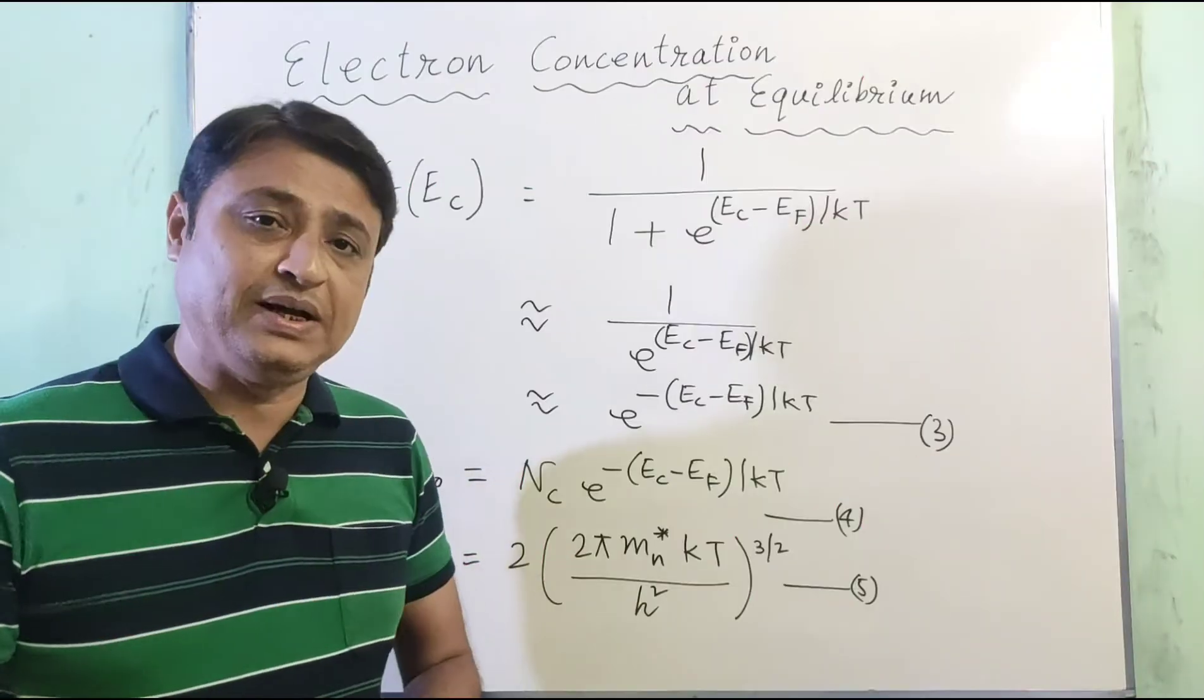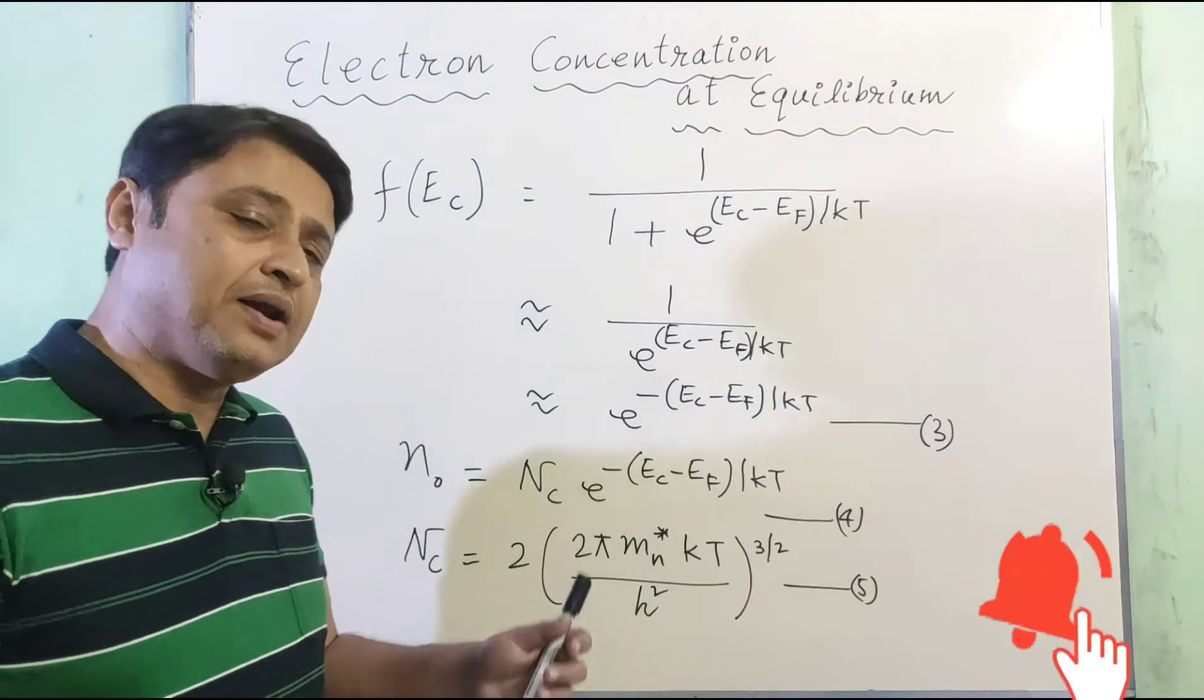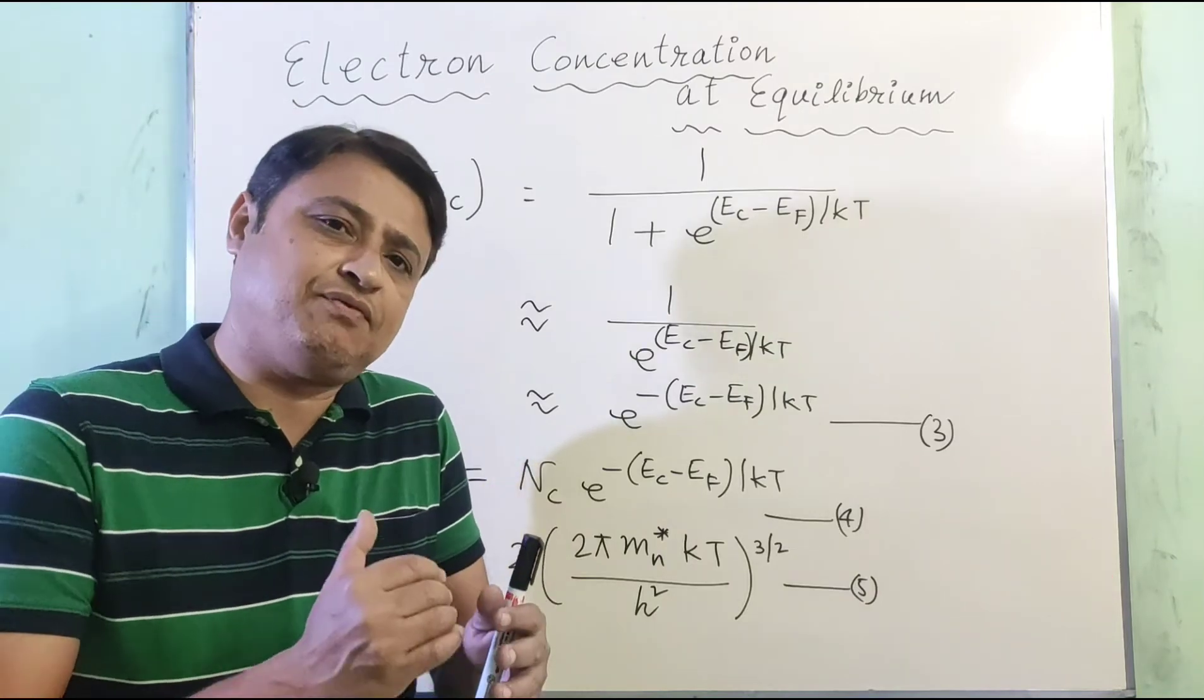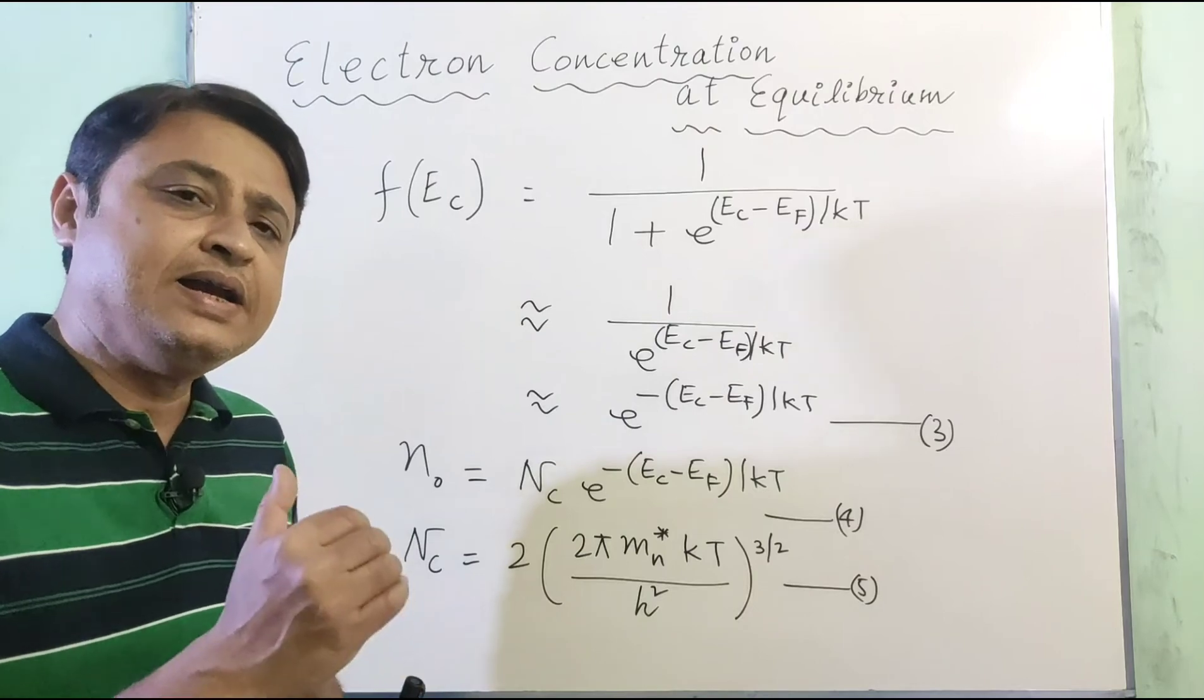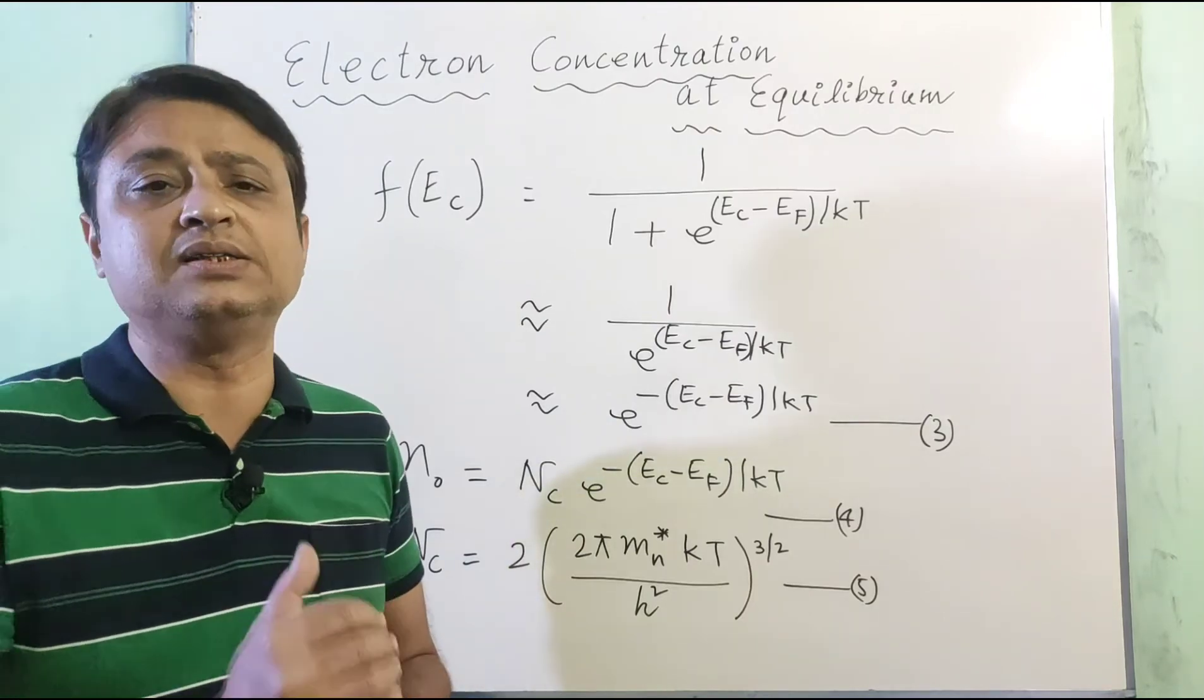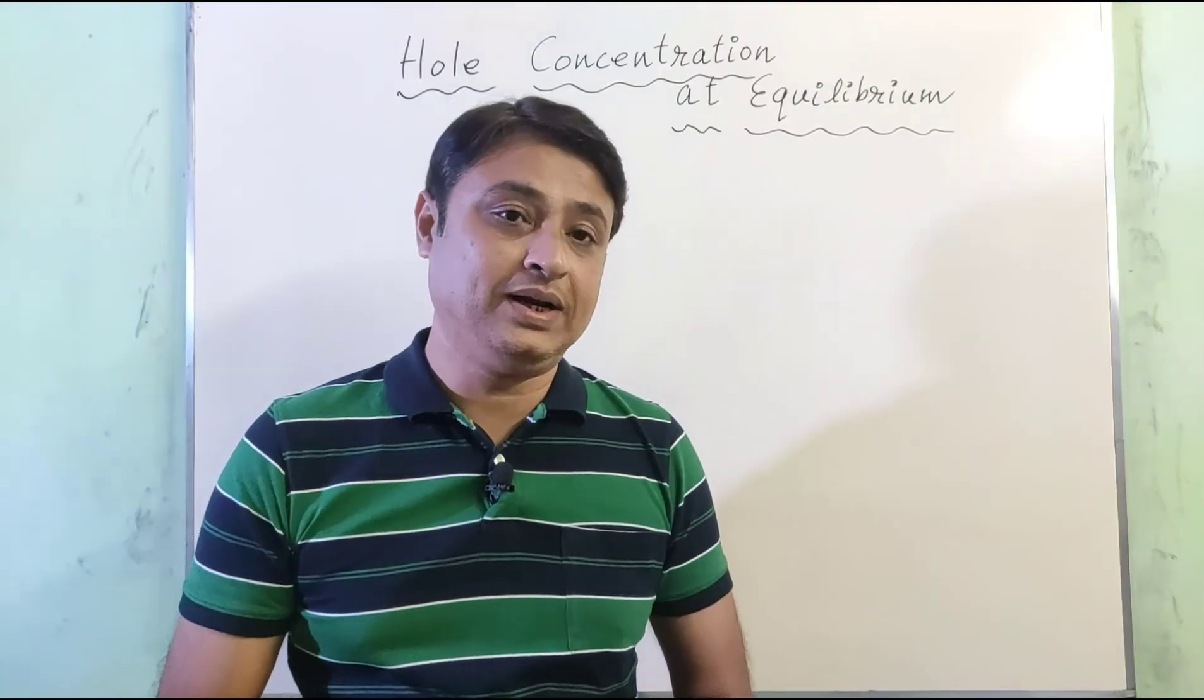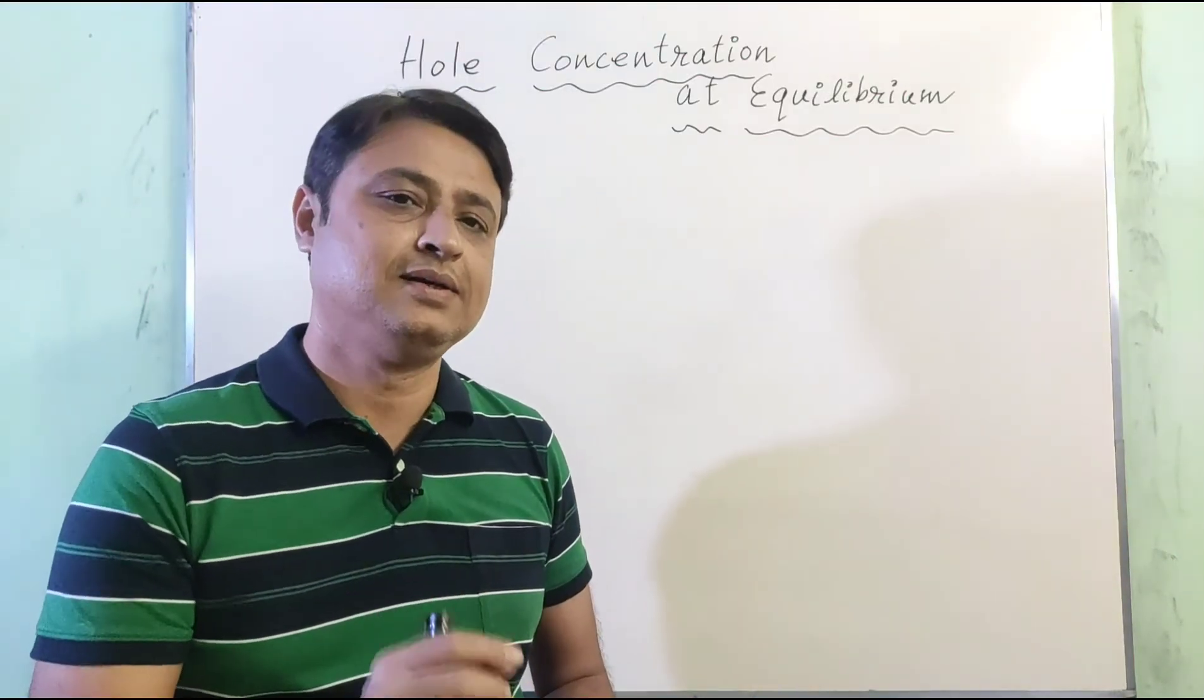The physical implication of equation 4 is that if the Fermi level moves closer to the conduction band, the electron concentration will be higher. Let's move on to calculate the hole concentration in the valence band at equilibrium.